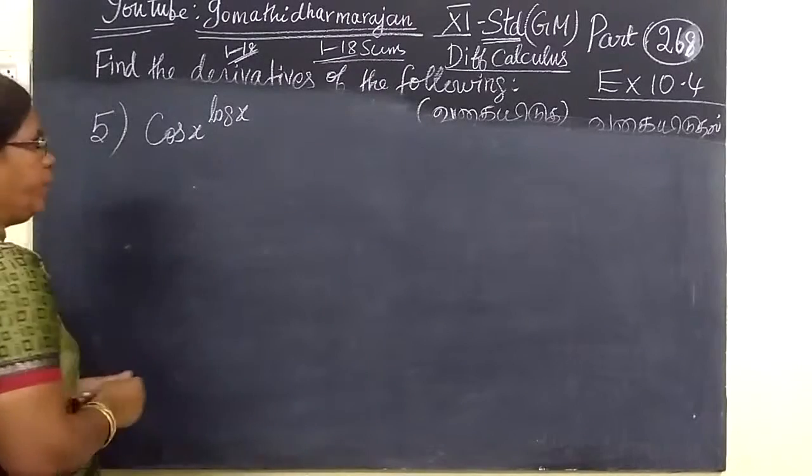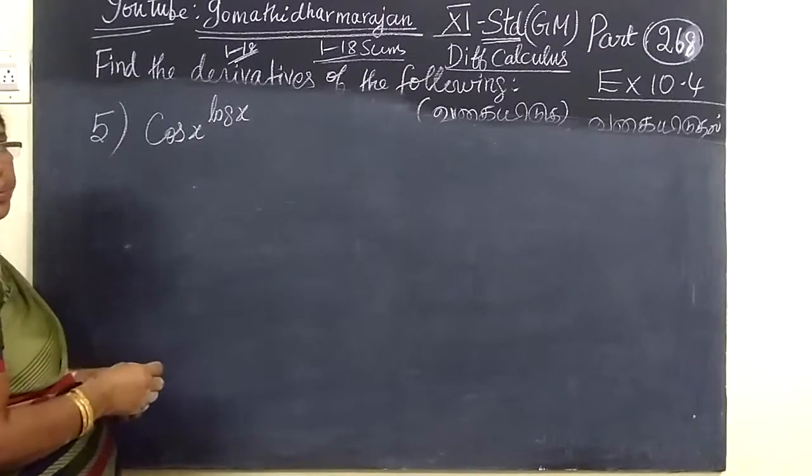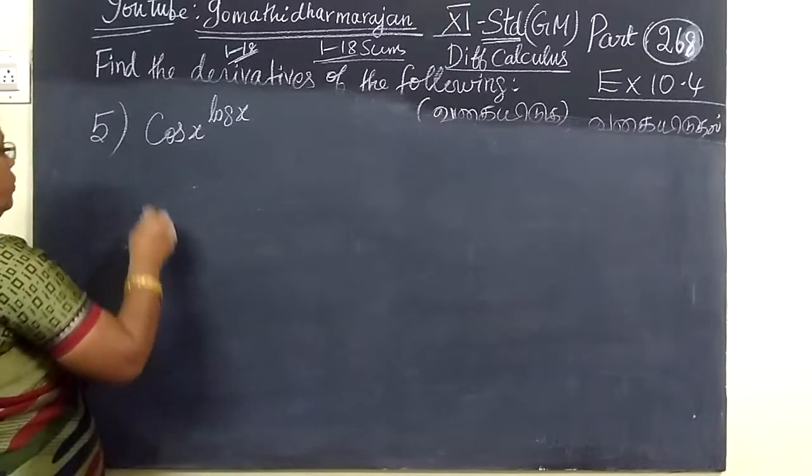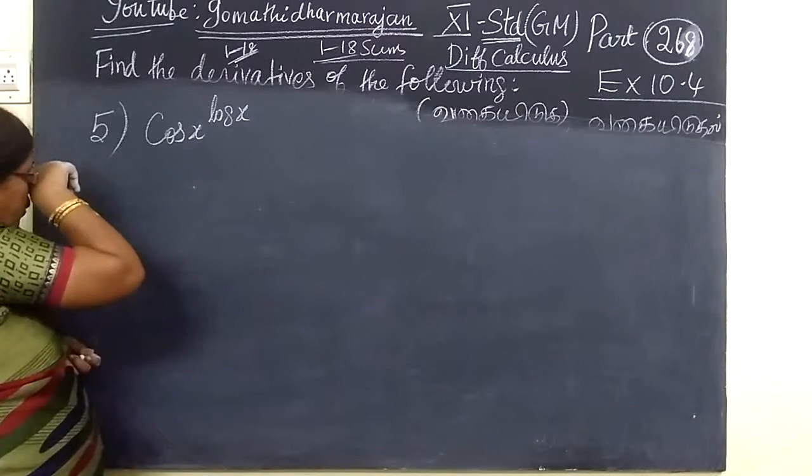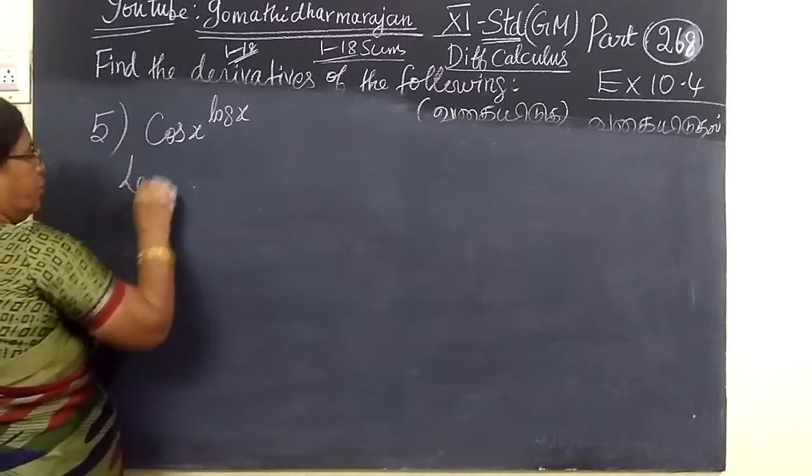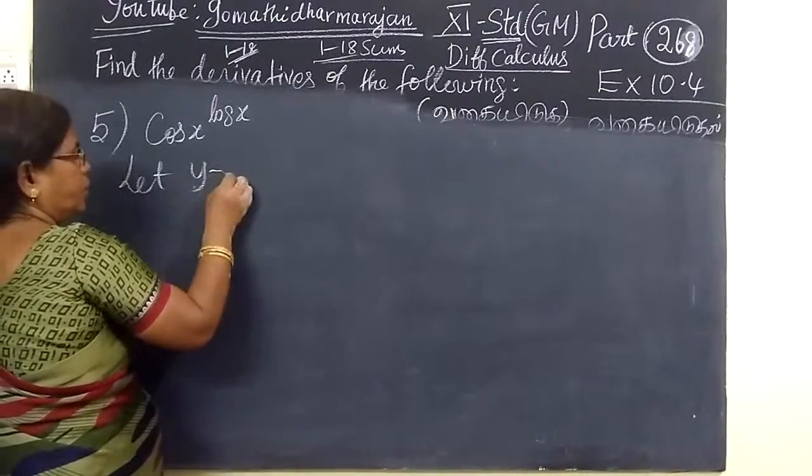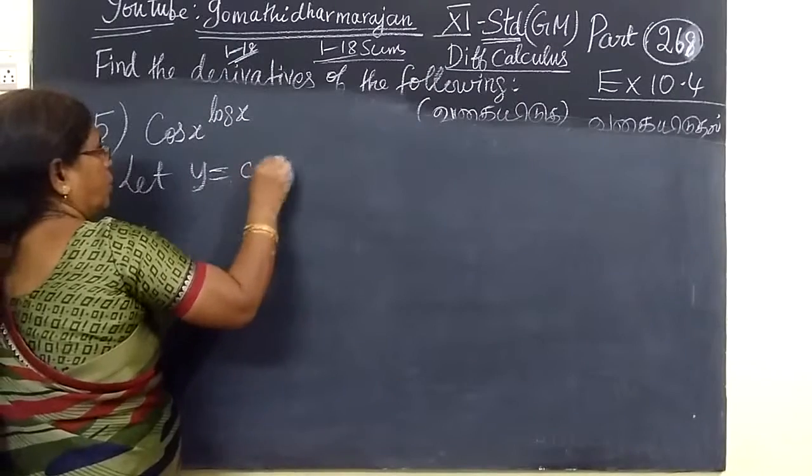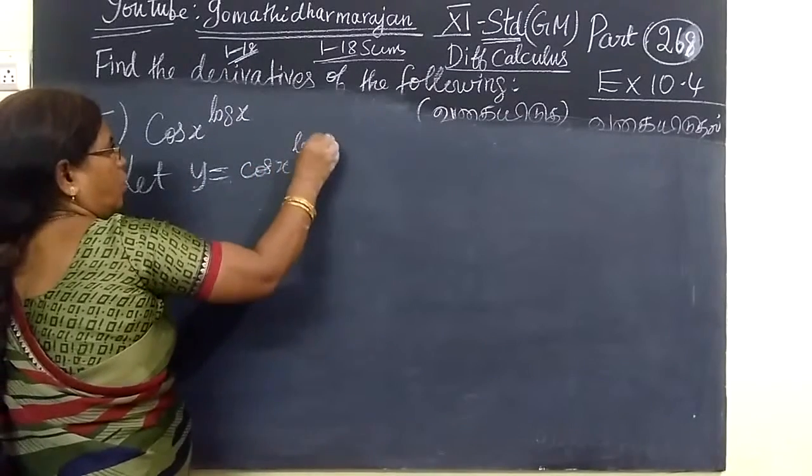So, question number 5 is Exercise 10.4. This is the Y equation. Let Y equal cos to the power log x. Taking log on both sides.